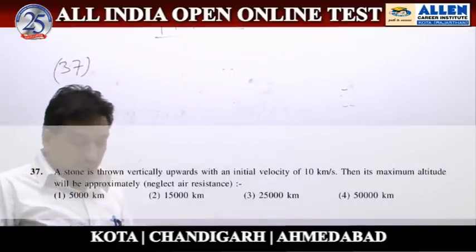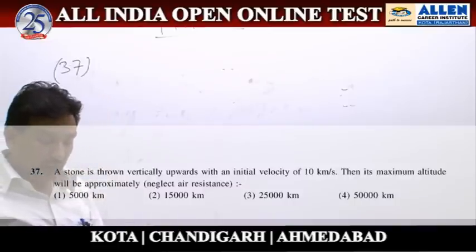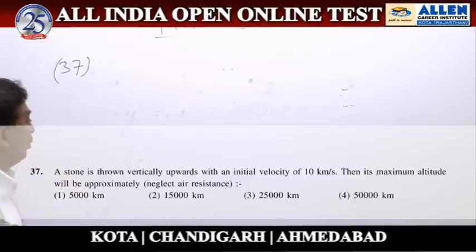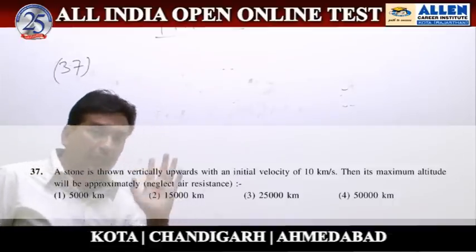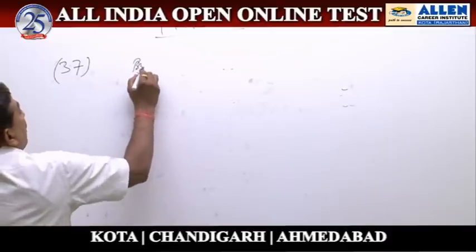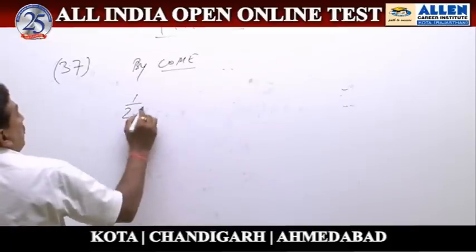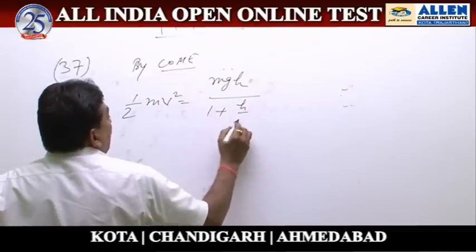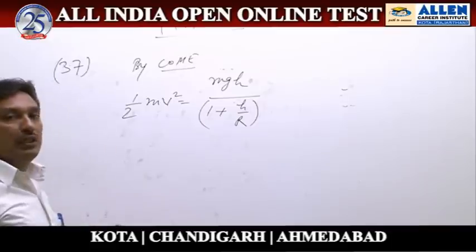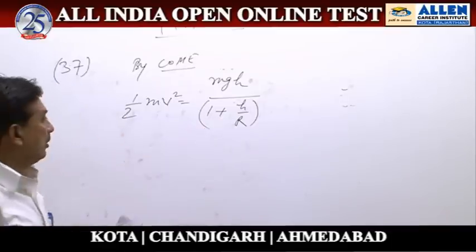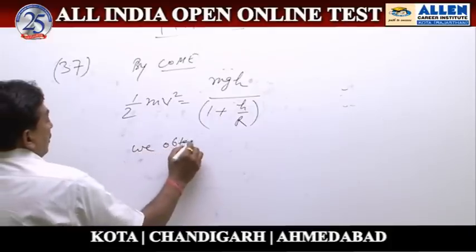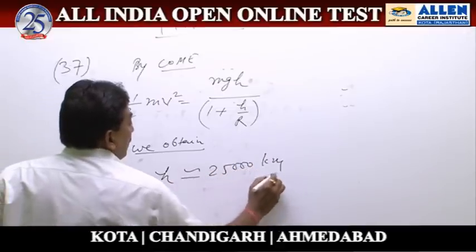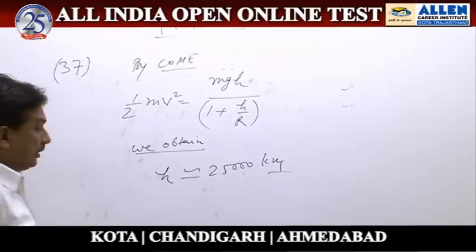In question number 37, a stone is thrown vertically upwards with an initial velocity of 10 km/s. We have to calculate the maximum altitude as an approximate value. By conservation of mechanical energy, 1/2 m v² = m g h / (1 + h/R). After substituting the values, h is approximately equal to 25,000 km. So option 3 is the correct answer.